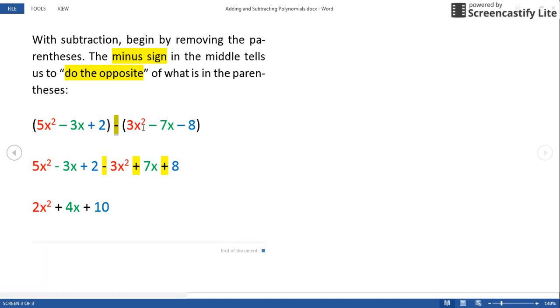What is the opposite of a positive 3x²? That would be a negative 3x². What is the opposite of a -7x? That's a positive 7x. And what is the opposite of a -8? It's a positive 8.